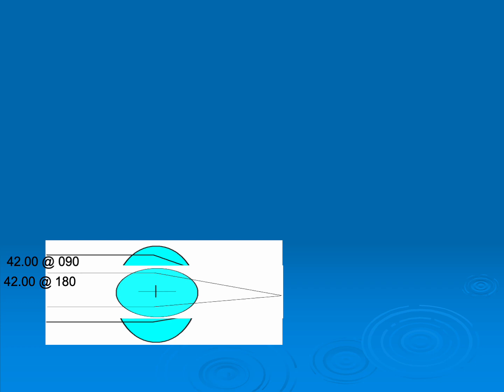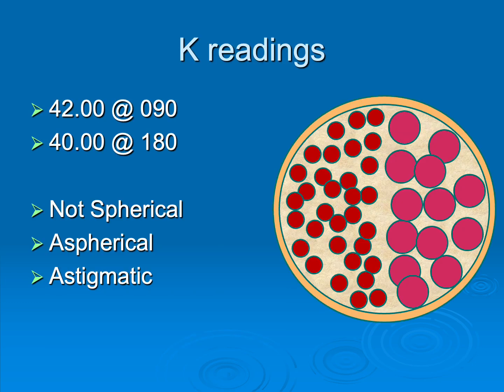But what if the two K-reading values are not the same? Like a half-pepperoni, half-Canadian bacon pizza, this represents an astigmatic cornea. It absolutely matters how you slice this pizza. This cornea is not spherical — it is aspheric or astigmatic. When we talk about the amount of astigmatism coming from the cornea, we're talking about the difference in those two K-readings. So a patient with 42 and 44 diopters would have two diopters of corneal astigmatism.